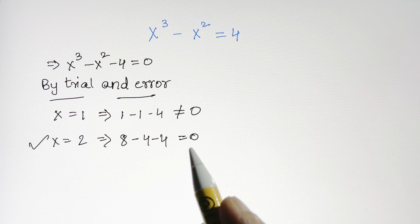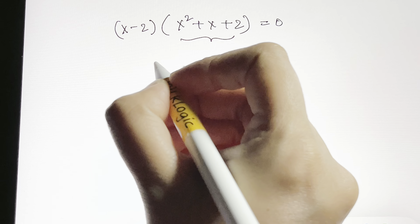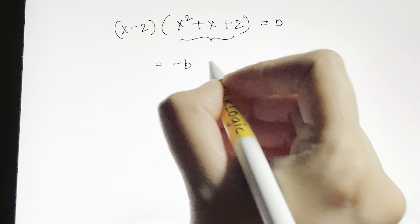So we now have x² plus x plus 2 equals 0 — a quadratic equation. Let's solve it using the quadratic formula: x equals negative b plus or minus the square root of (b² minus 4ac), all over 2a. Substituting: negative 1 plus or minus the square root of (1 minus 4 times 1 times 2), over 2 times 1.